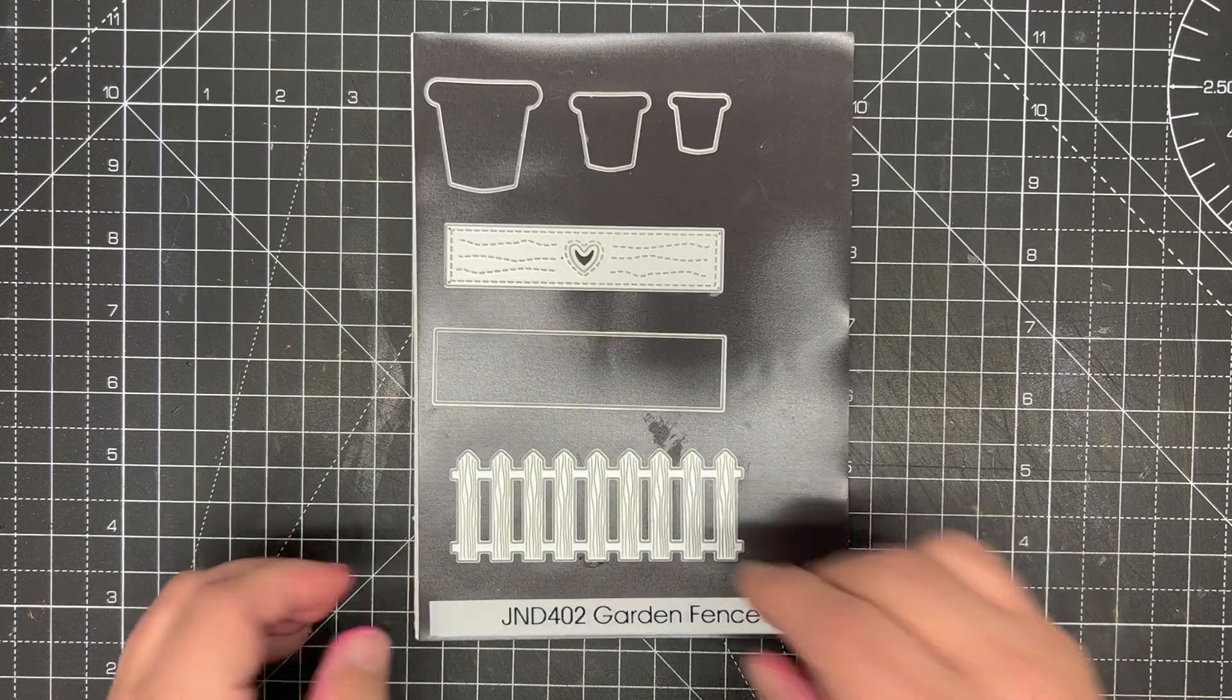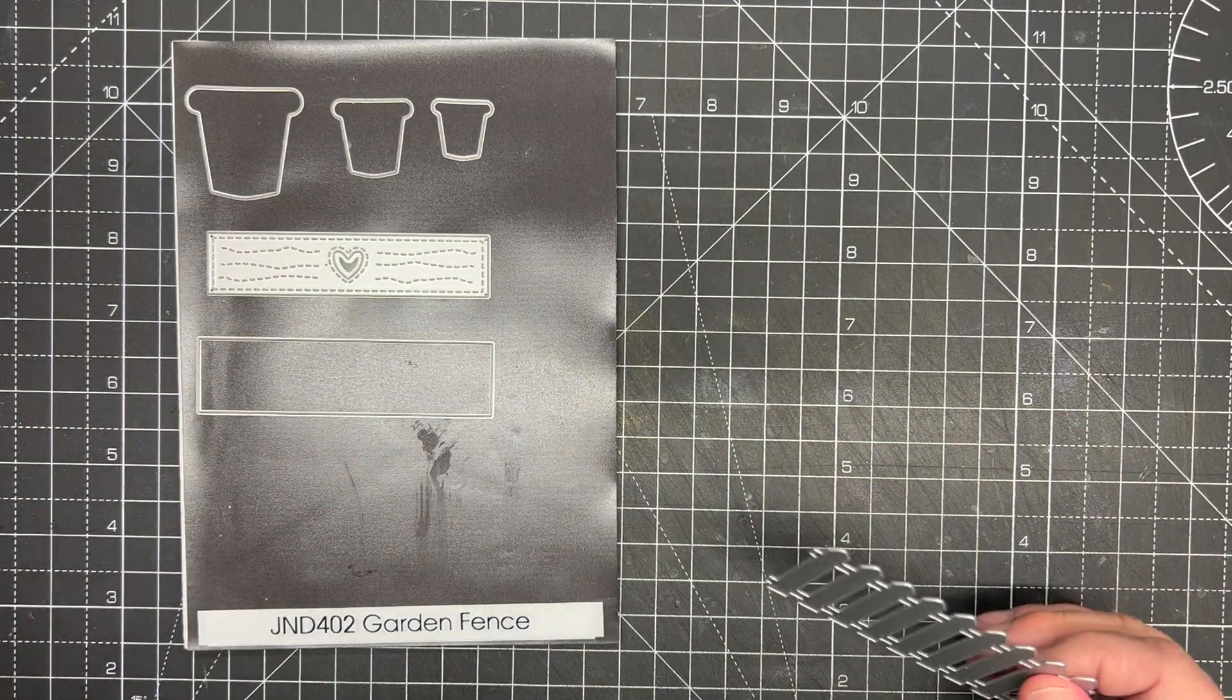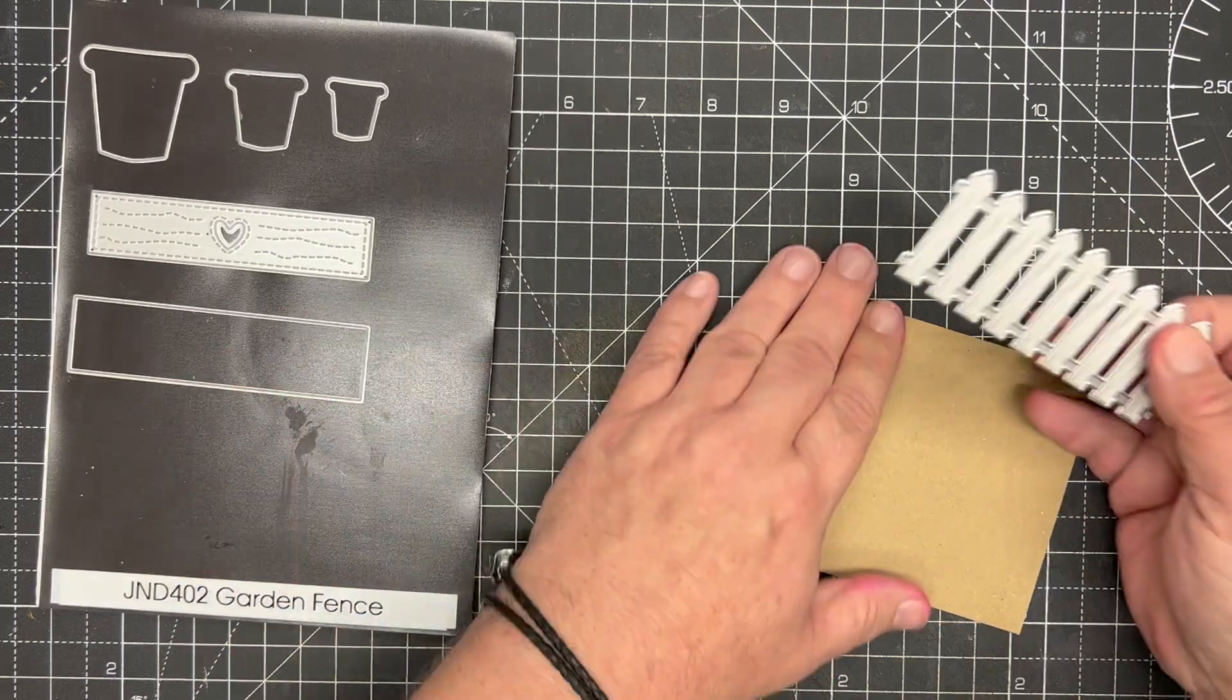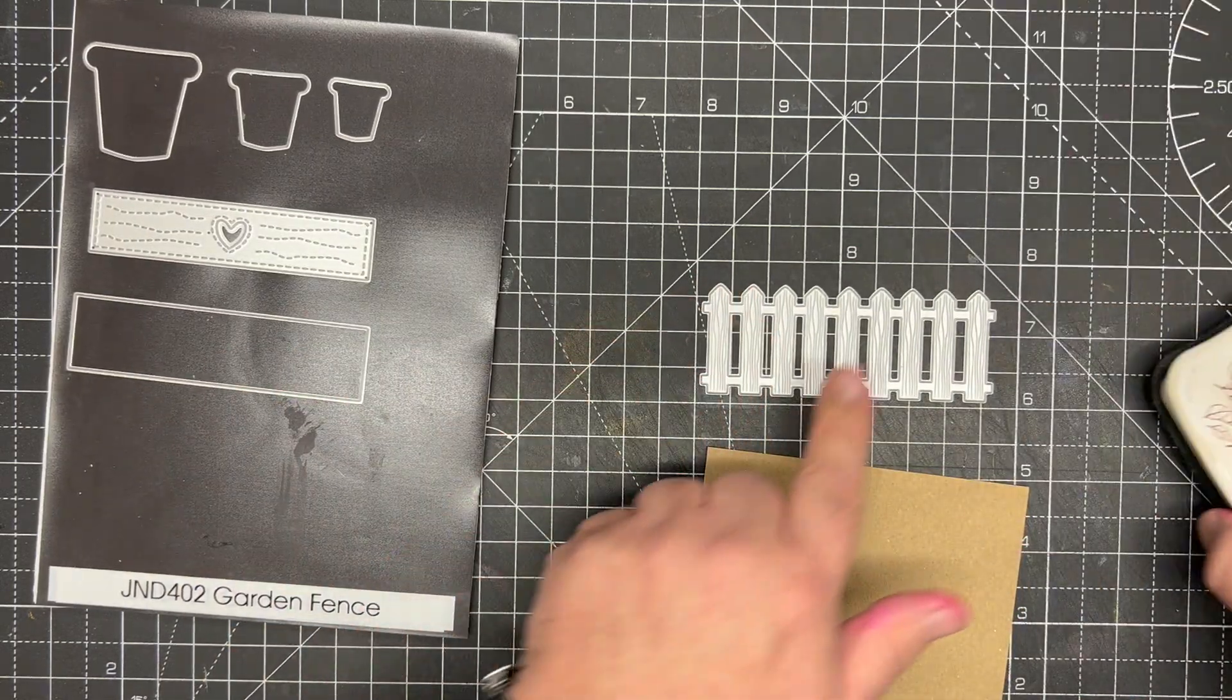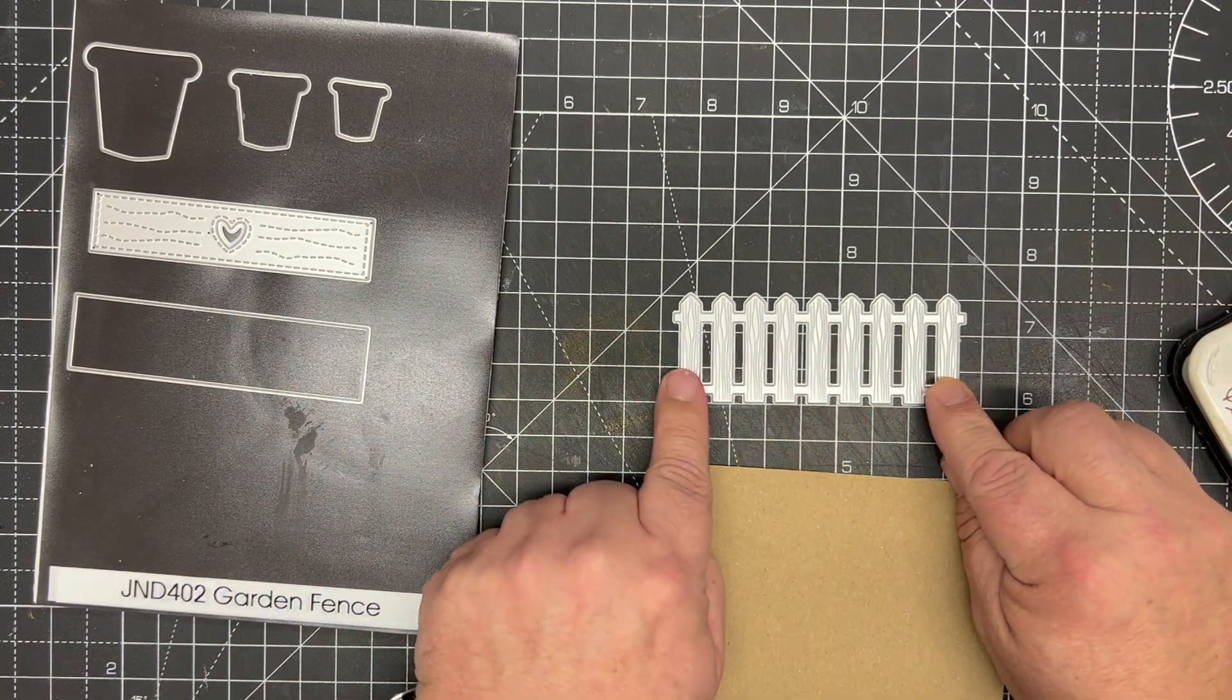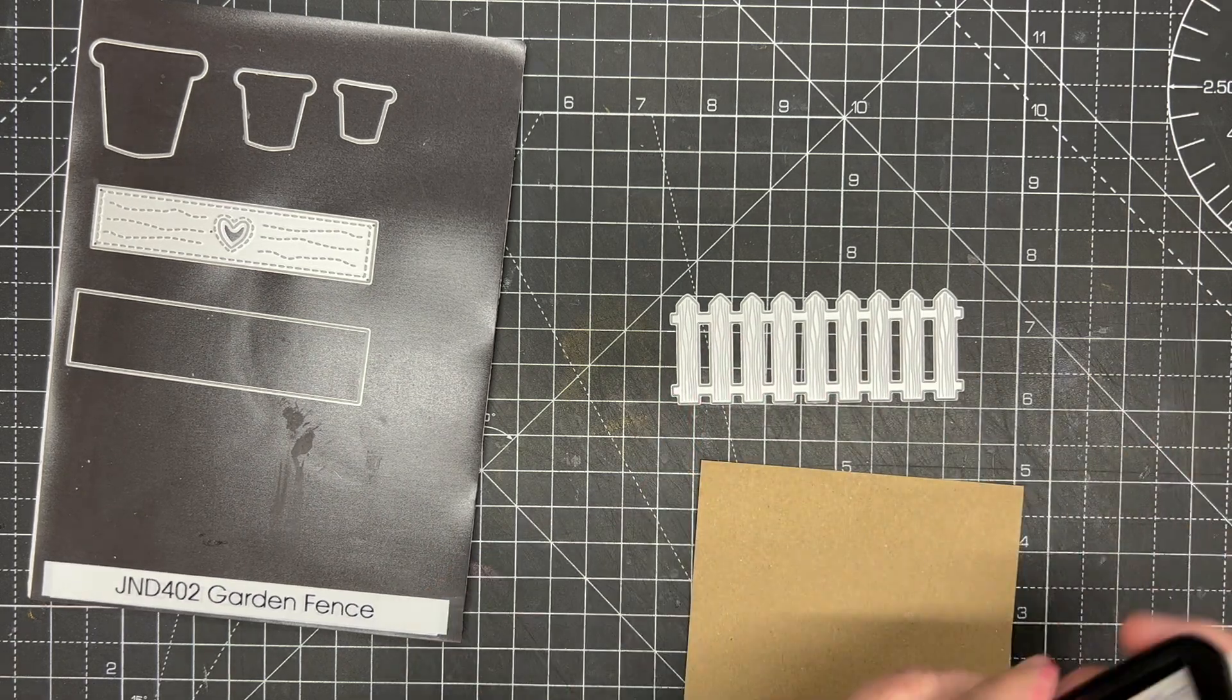So we're going to start by cutting our fence. I've got a piece of craft card here and all we're going to do is the die was designed with ink lines on it.